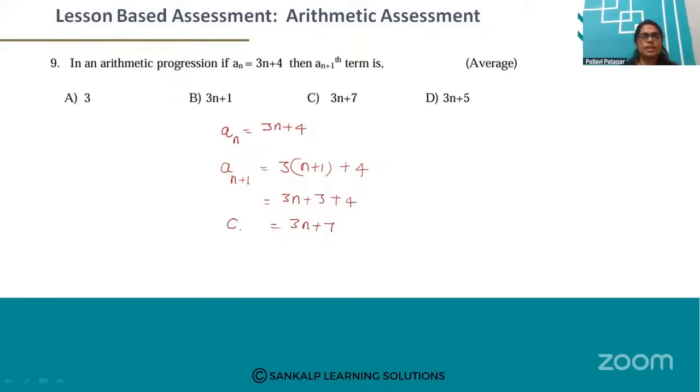So this is the (n+1)th term. The correct option is 3n plus 7.